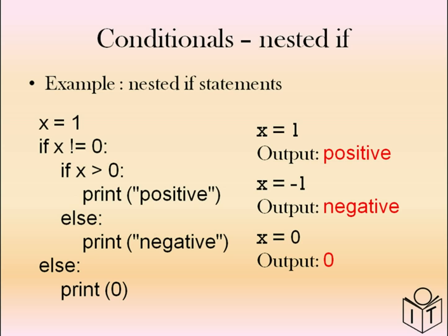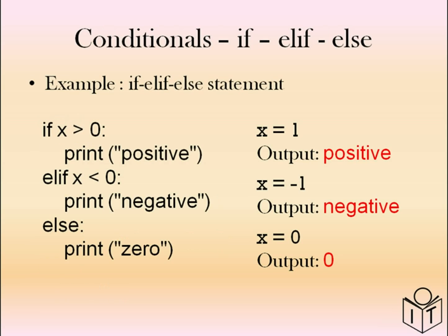We can put if statements inside other if statements — these are called nested ifs or nested if statements. Here we have an if-else statement inside another if-else statement. The code checks to make sure x doesn't equal zero; if it does, it prints zero as part of the else. If it doesn't equal zero, we check if it's greater than zero (positive) or less than zero (negative). An alternative is to use if, elif, and else. You start with if, finish with else, and use elif for any additional conditions in between.